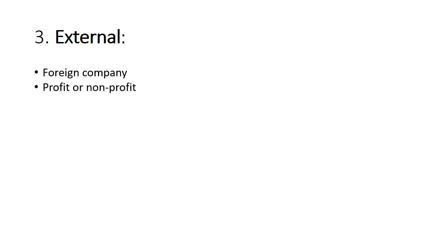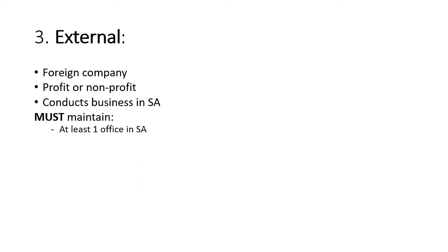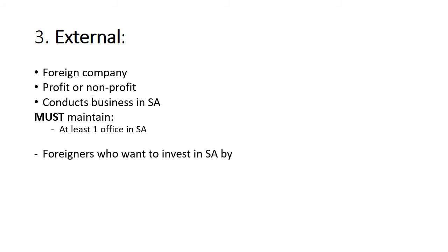An external company is a foreign company — profit or non-profit — that conducts its business in South Africa. Such an external company must maintain at least one office in South Africa. Foreigners who want to invest in South Africa must apply for a business permit and invest a prescribed financial contribution before being accepted as an external investor or external company.